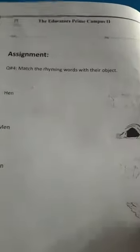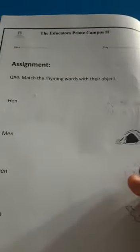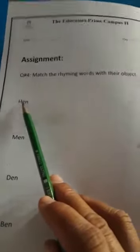Today our activity, as you know we did the sound words yesterday. So today our activity is match the rhyming words with their objects. First of all we have the spelling of hen.